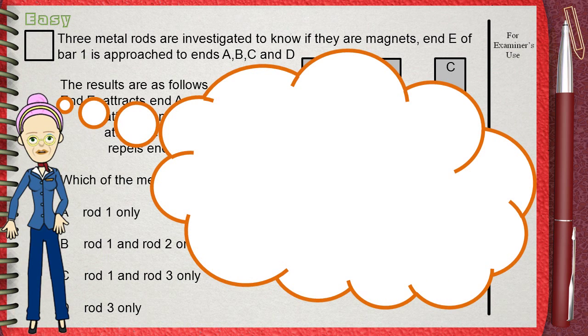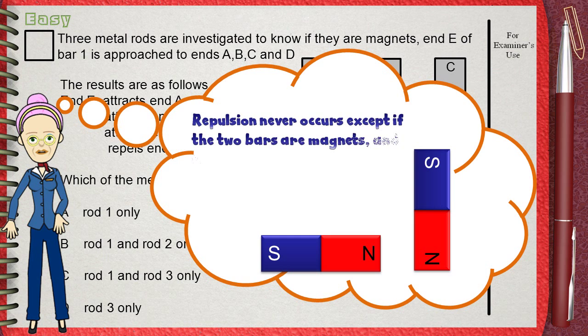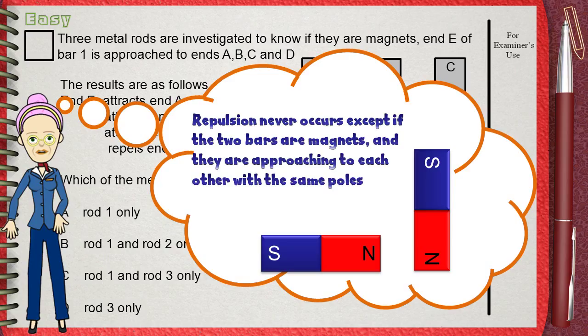there is something you have to know. If you have two bars and they repel each other, repulsion never occurs except if the two bars are magnets and they are approaching each other with the same poles. Otherwise,